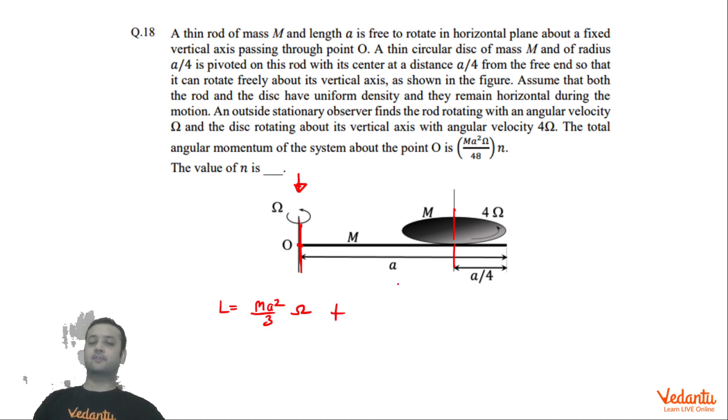Now we have to write the angular momentum of the disc about point O. Angular momentum of the disc about its center of mass will be Iω, where I will be the moment of inertia about the center of mass, plus angular momentum of center of mass about point O.